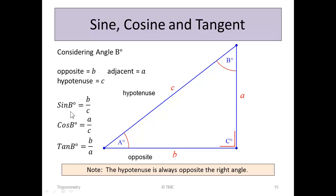If we calculate the ratios for angle B, sine of B is the opposite over the hypotenuse, B over C. Cos of B is the adjacent over the hypotenuse, A over C. And tan of B is the opposite over the adjacent, B over A.